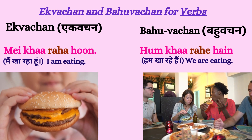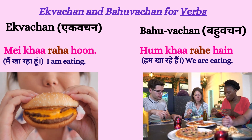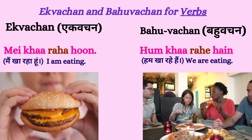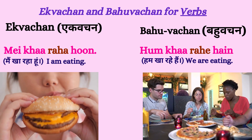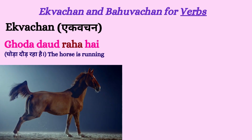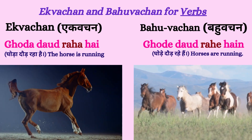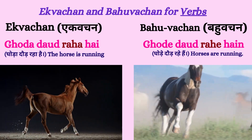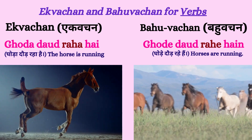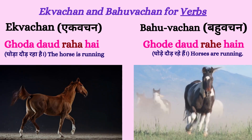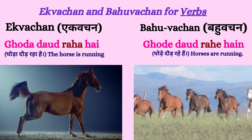But the moment somebody says hum kha rahe hain, the verb root remains kha, but raha changes to rahe — because raha refers to the process of eating of one person, and rahe refers to the fact that this verb is being performed by many people. Similarly, if we say 'the horse is running', in Hindi we say ghoda daur raha hai. But when we say 'horses are running', ghoda becomes ghode, and daur raha hai becomes daur rahe hain — because rahe refers to running being done by more than one animal.